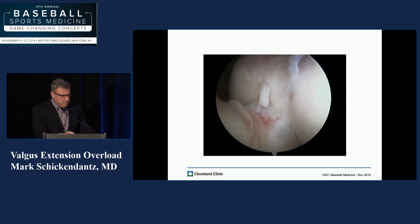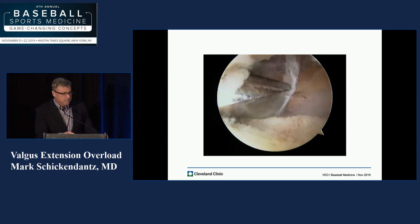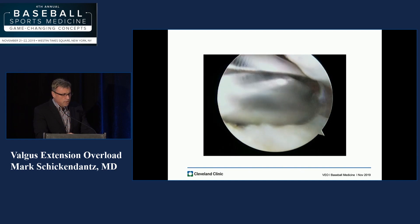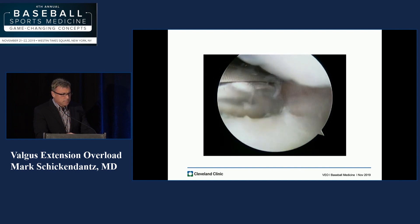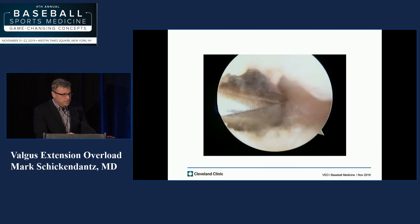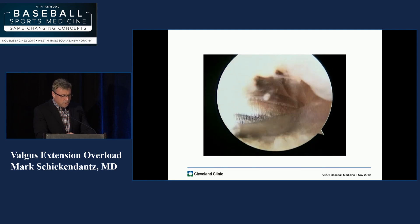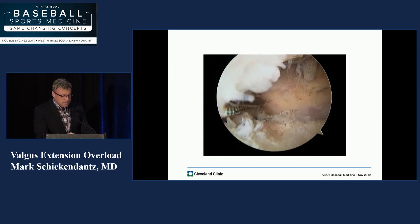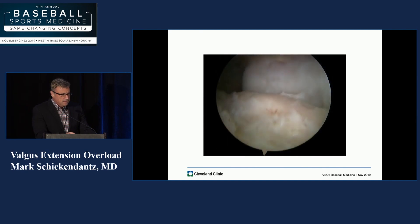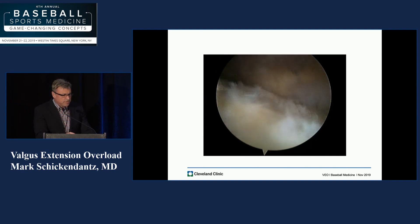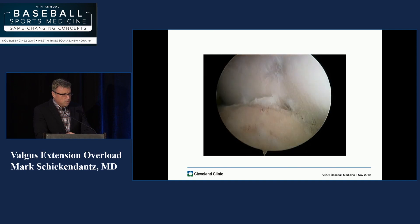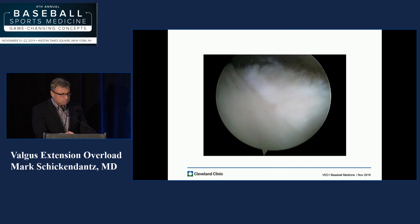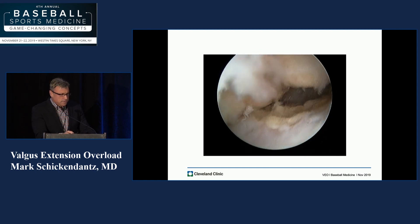There's also some synovitis associated with this. We'll come in with a variety of instruments — sometimes just a little shaver, sometimes a burr if we're doing more work. The goal is to simply remove all the chondromalacia, the loose fragments, the osteophytes, and the synovium, so there's no longer any impingement in the back of the elbow as it extends in the late phases of the throwing motion. And this is what it looks like after it's been taken out — a little more freedom, no more spur, synovium's been taken out as well.